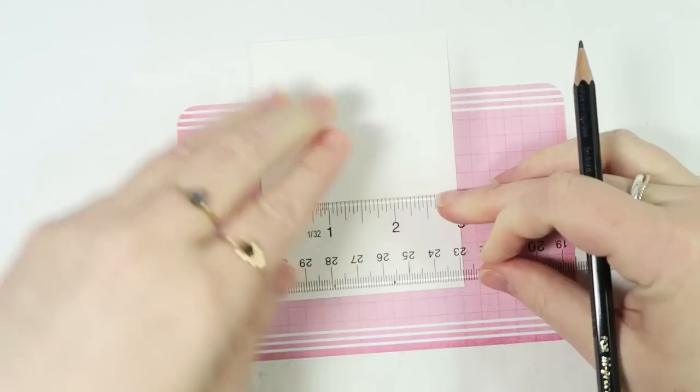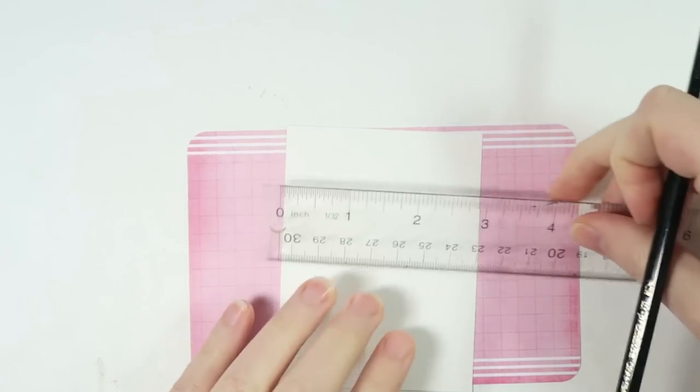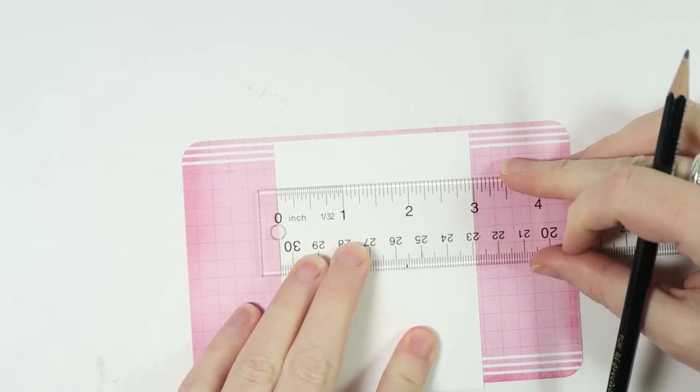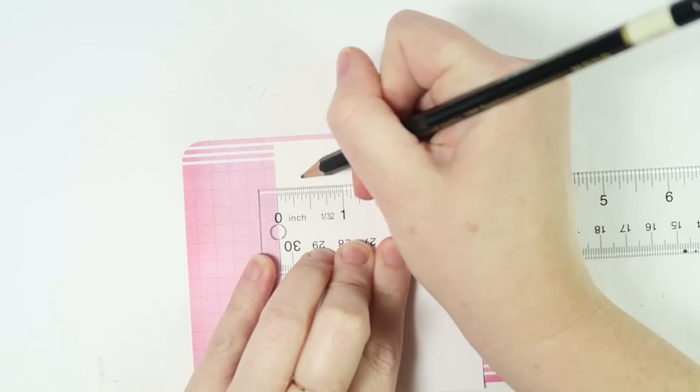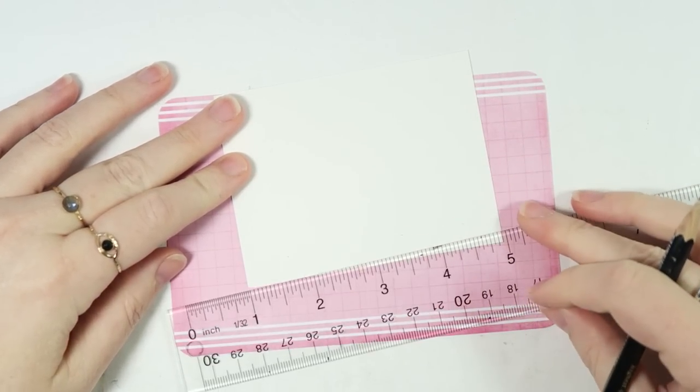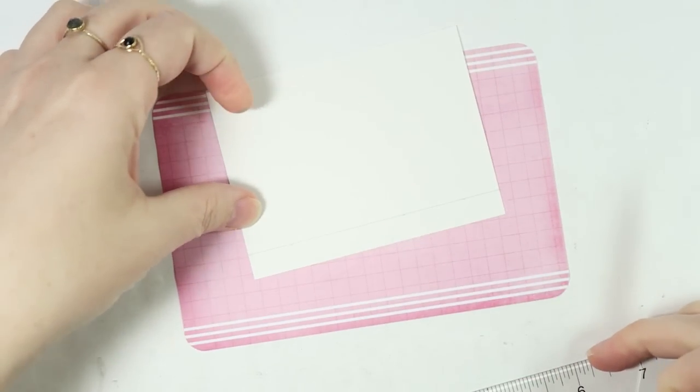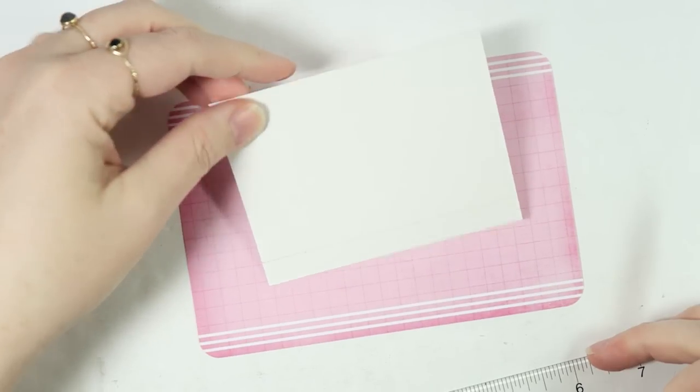Three eighths, three eighths, and then three eighths. Then go ahead and draw a line to connect all three of those marks so that you have something that looks like that.